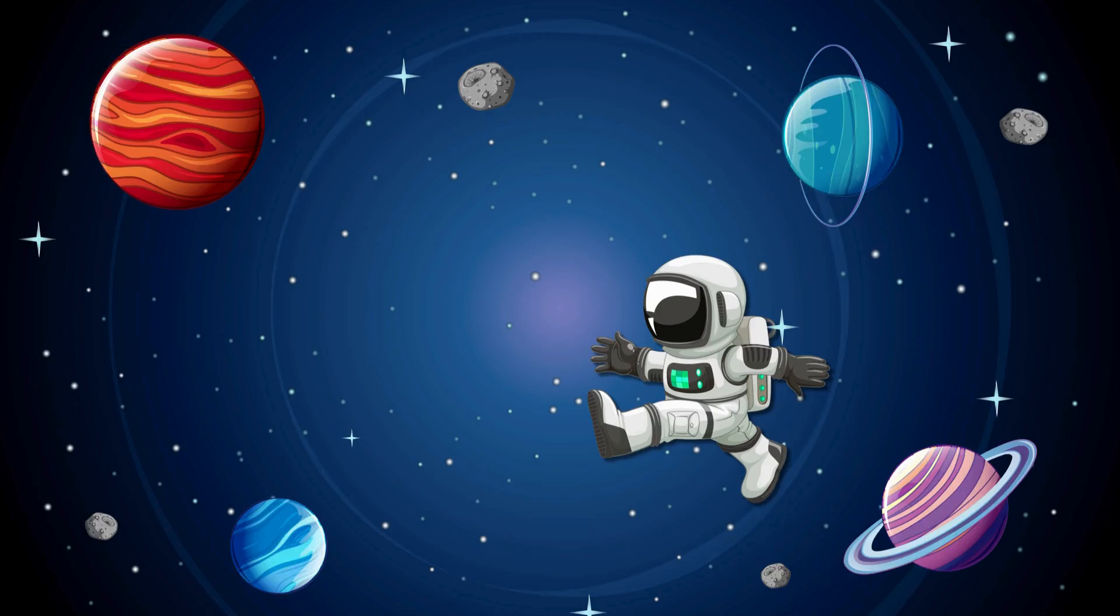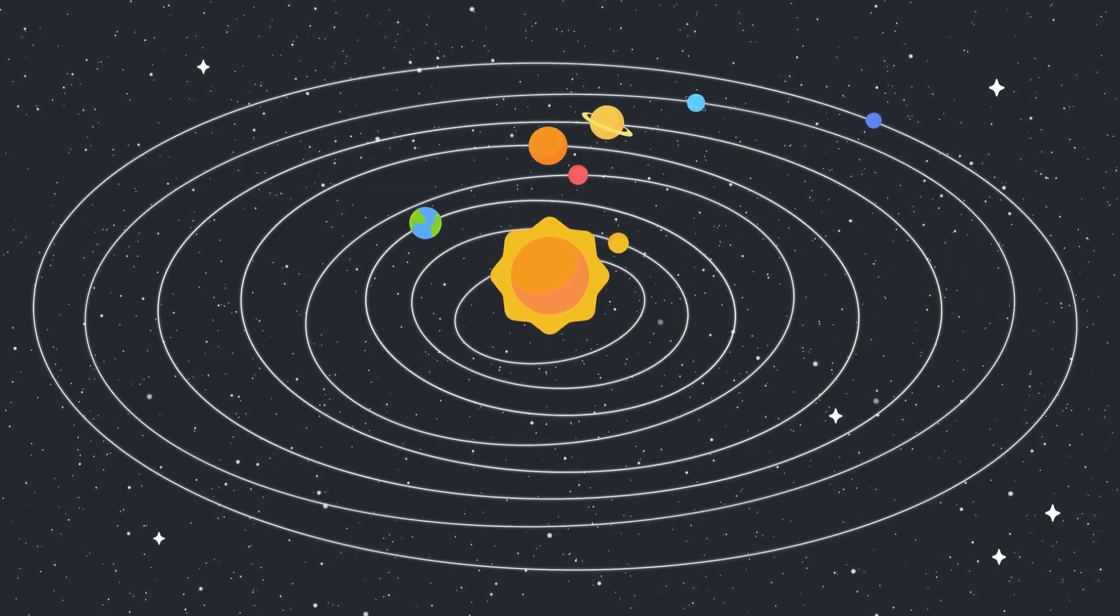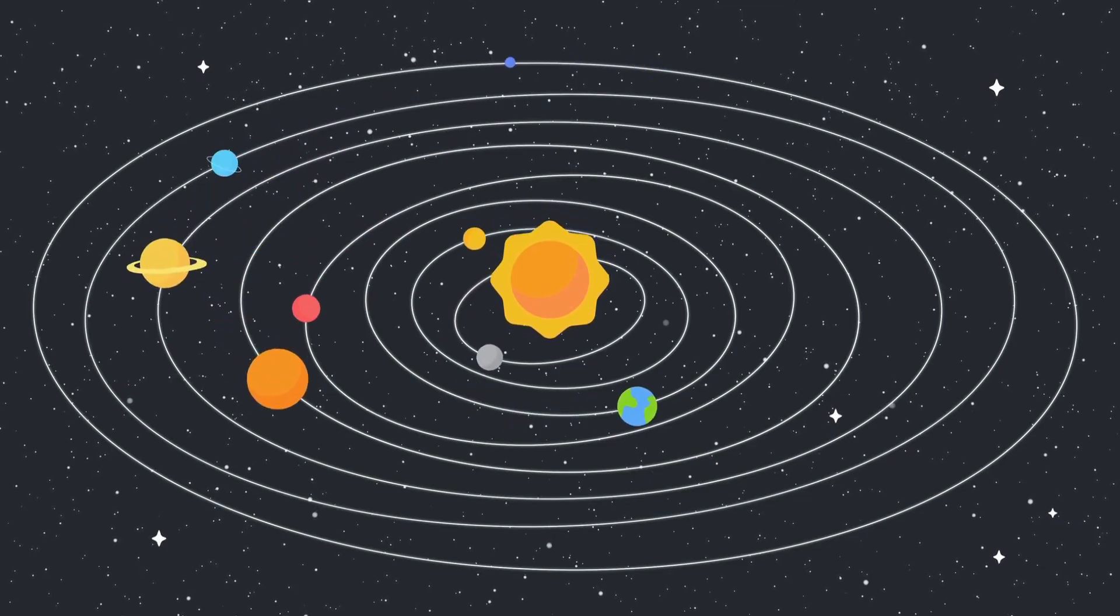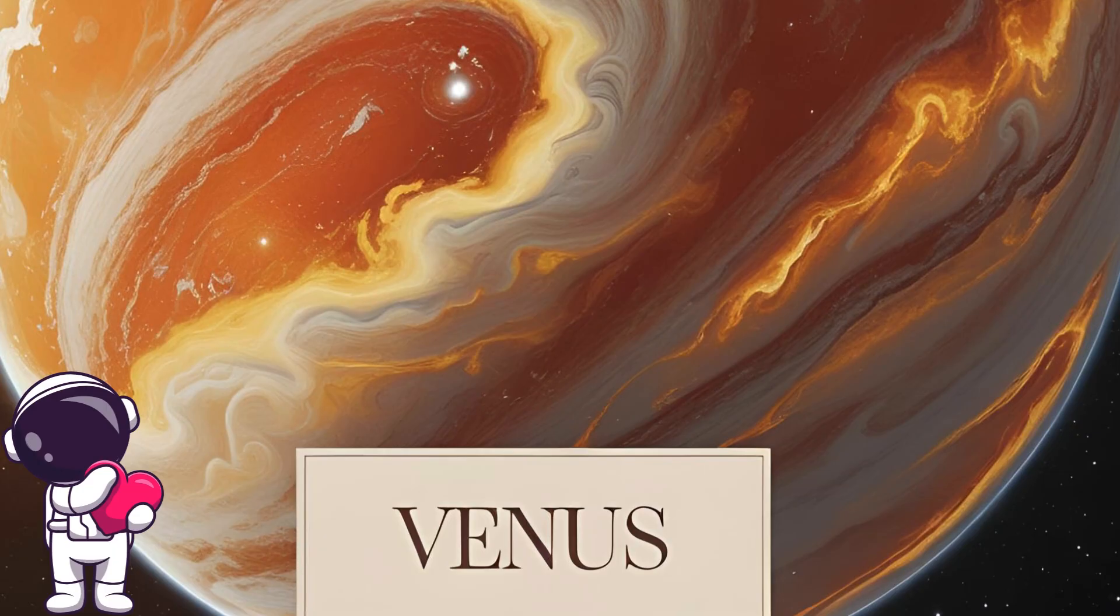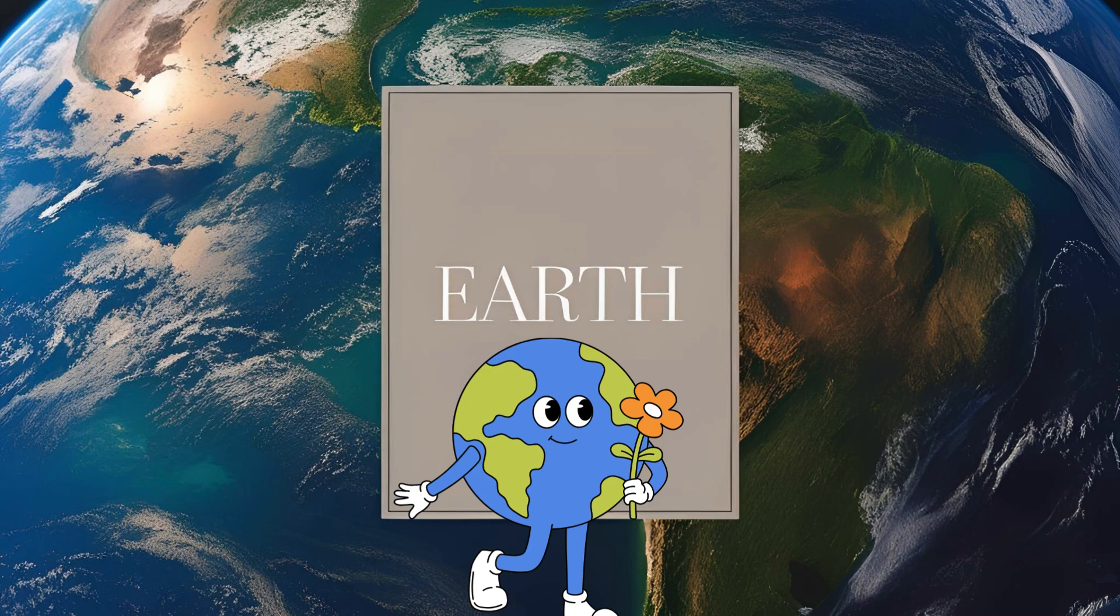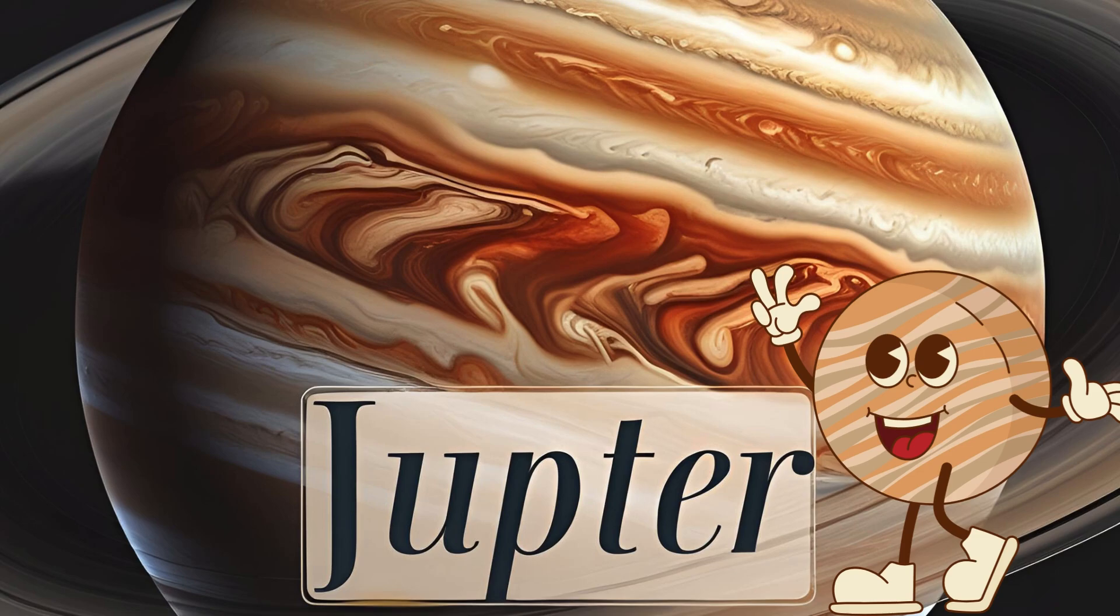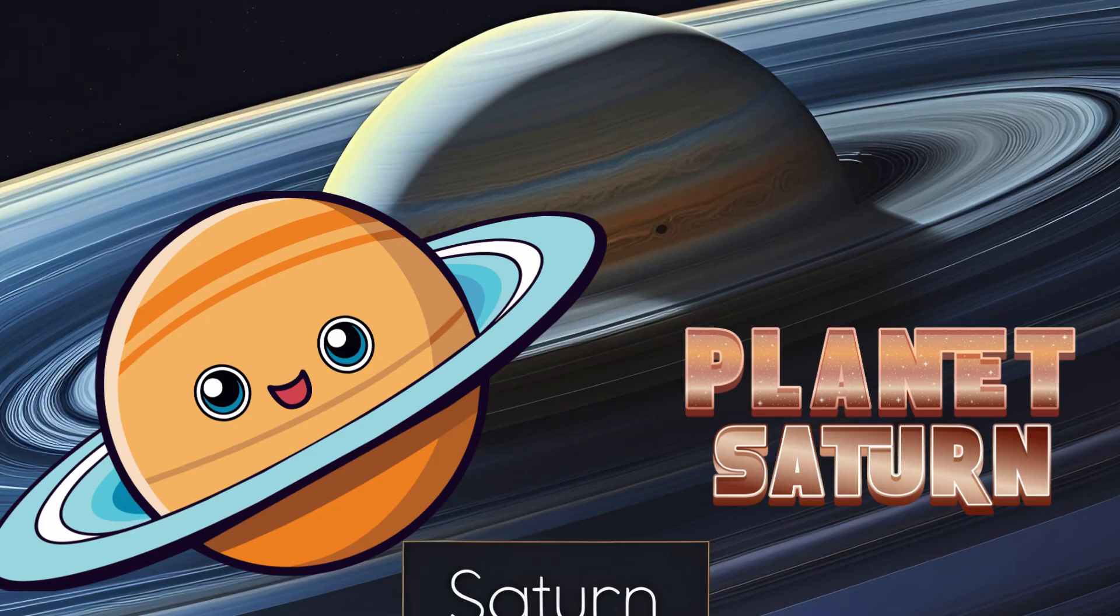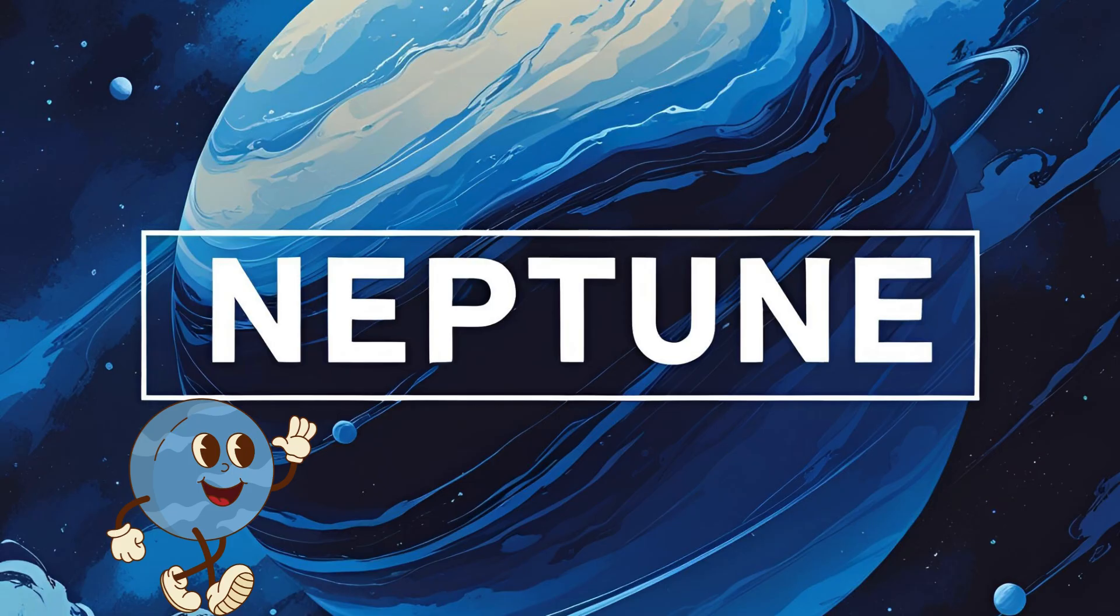Now, let's meet the planets of our solar system in order from the closest to the sun to the farthest away. First is Mercury. Next is Venus. Then comes Earth, our home. After Earth is Mars. Next is Jupiter, the largest planet. Then Saturn, famous for its rings. After Saturn is Uranus. And the farthest planet is Neptune.